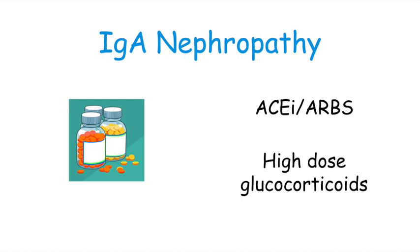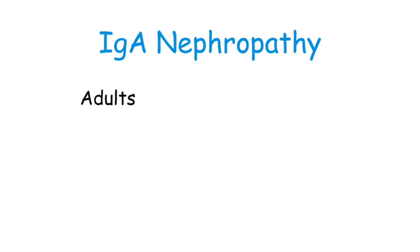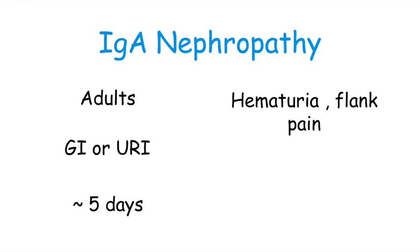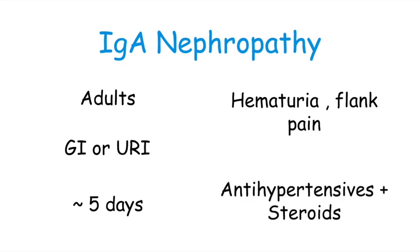To summarize IgA nephropathy: it commonly affects adults, especially males in their 20s and 30s. It is often preceded by mucosal infections of the GI or upper respiratory tract, and within five days patients may develop hematuria, flank pain, and hypertension. Management includes antihypertensives and ACE inhibitors or ARBs for proteinuria; high-dose glucocorticoids for severe cases.